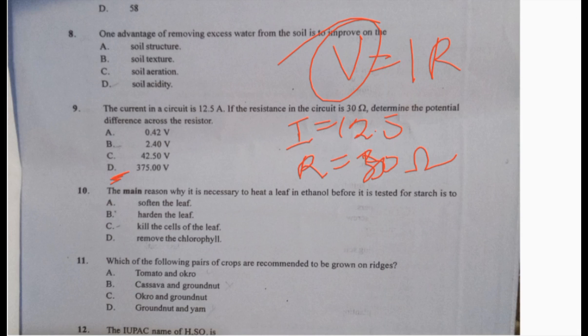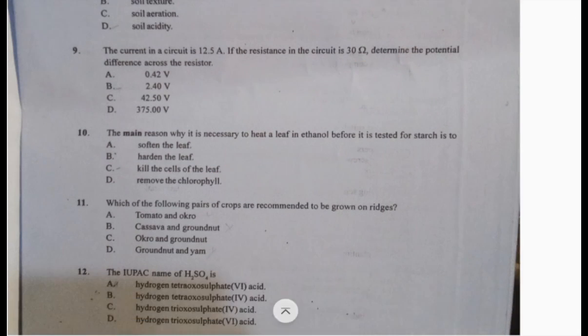Number 10: the main reason it's necessary to heat a leaf in ethanol before testing for starch is to remove the chlorophyll. Number 11: which pairs of crops are recommended to be grown on ridges? Looking at the options, cassava and groundnut need to be grown on ridges for good drainage.